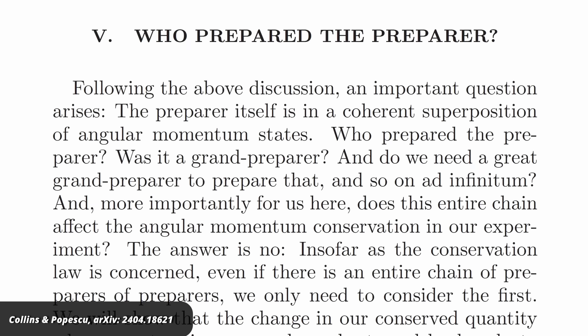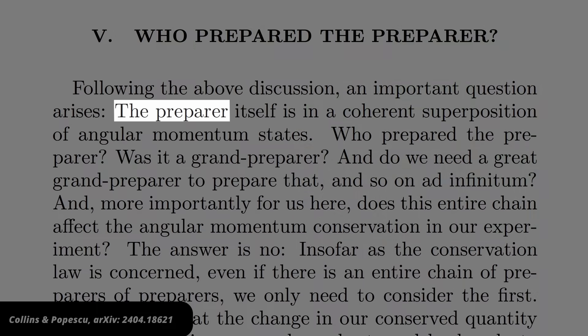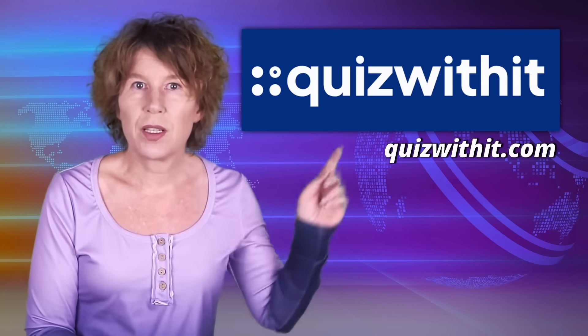How do they solve the problem in the paper? By inventing an additional carrier for the conserved quantities that they call the preparer. They introduce this so that the conservation laws are fulfilled at each interaction. And that is right, but this is what always happens. By the way, this video comes with a quiz that lets you check how much you remember.